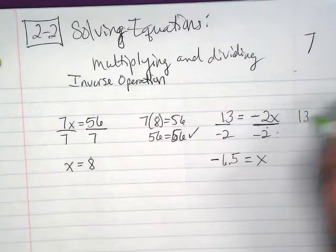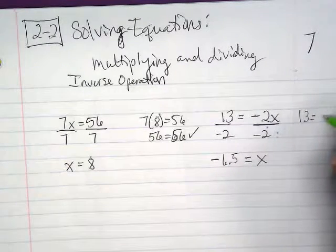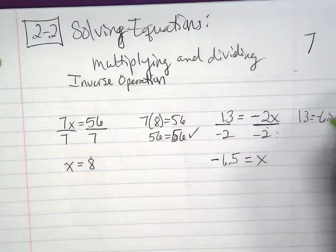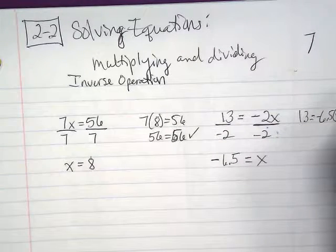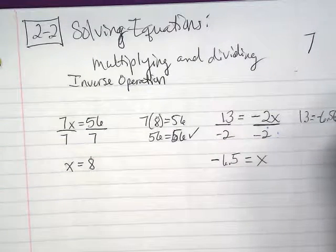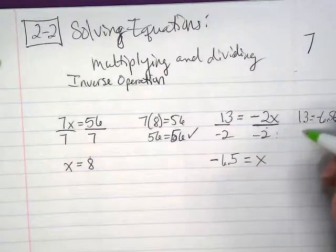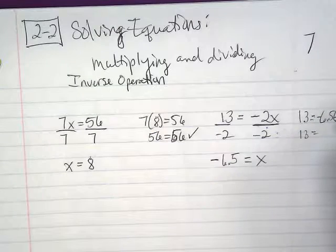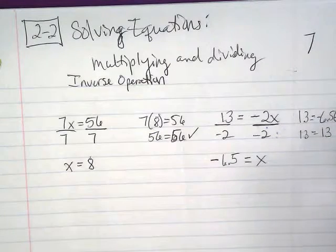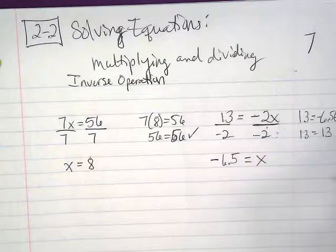Again, with a check, 13 is equal to negative 6.5 times negative 2. I reversed where the x is, but you get the idea. And that would be a positive number because the two negatives would equal a positive, and 6.5 times 2 equals 13.